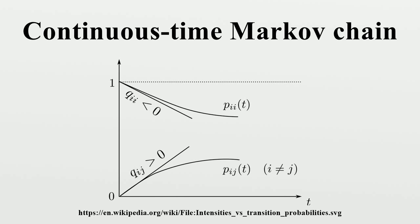Hitting times. The hitting time is the time, starting in a given set of states, until the chain arrives in a given state or set of states. The distribution of such a time period has a phase-type distribution. The simplest such distribution is that of a single exponentially distributed transition. For a subset of states A, the vector of expected hitting times is the minimal non-negative solution to the relevant system of equations.